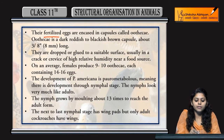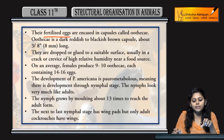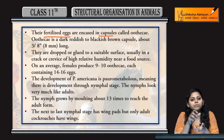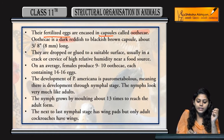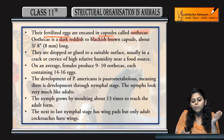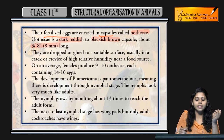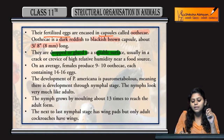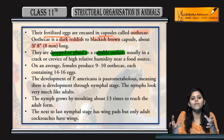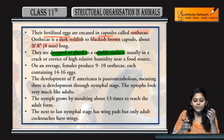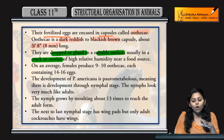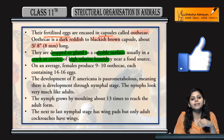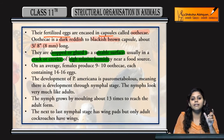Fertilized eggs are encapsulated in a capsule; these capsules are called oothecae. The oothecae are dark reddish to blackish brown in color, about eight millimeters long. They are dropped and glued to a suitable surface, usually in cracks or crevices of high relative humidity, near any food source.